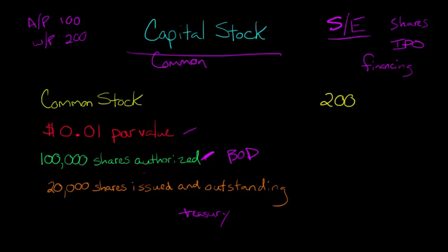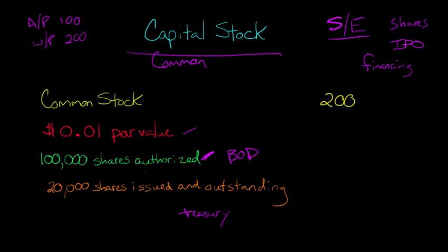When we talk about the par value, what we want to focus on in this problem is this 20,000 shares issued and outstanding. We're not concerned with the amount that were authorized but haven't been issued or outstanding. We want to focus on what this par value even means.